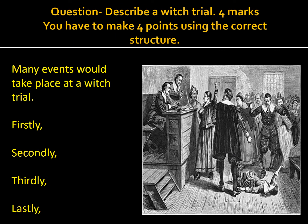The last part of this lesson: describe a witch trial, worth four marks. Make four points using the correct structure. You have: 'Many events would take place at a witch trial. Firstly... Secondly... Thirdly... Lastly...' For example: firstly, witches could be asked to read the Lord's Prayer without making a mistake; secondly, witches could be asked to walk over hot metal. Try to give four points on what would actually happen at witch trials.